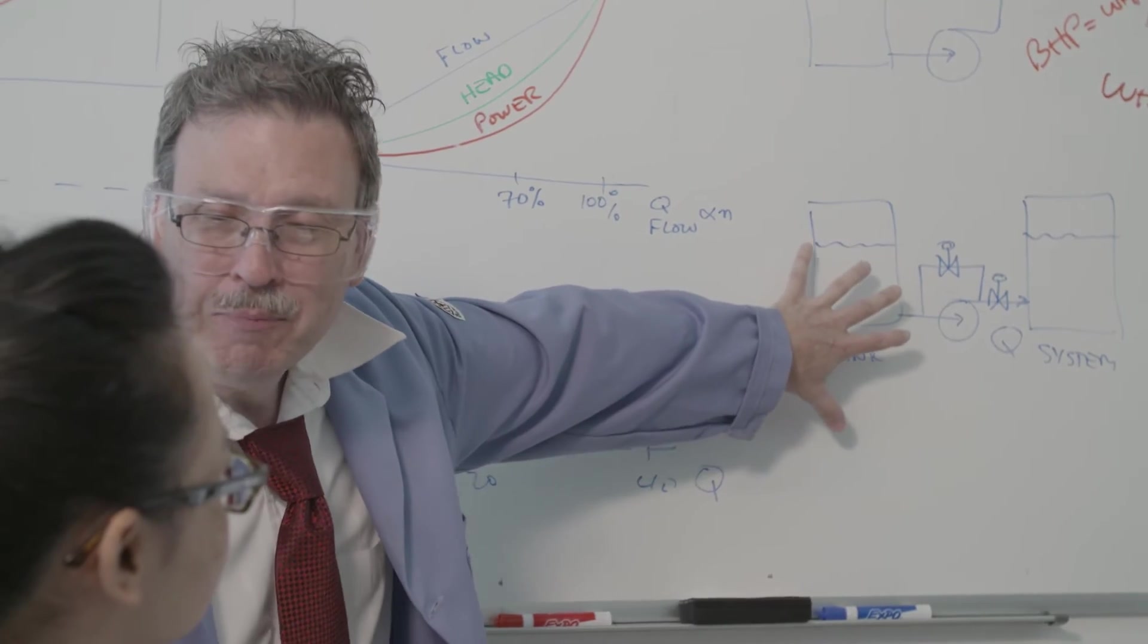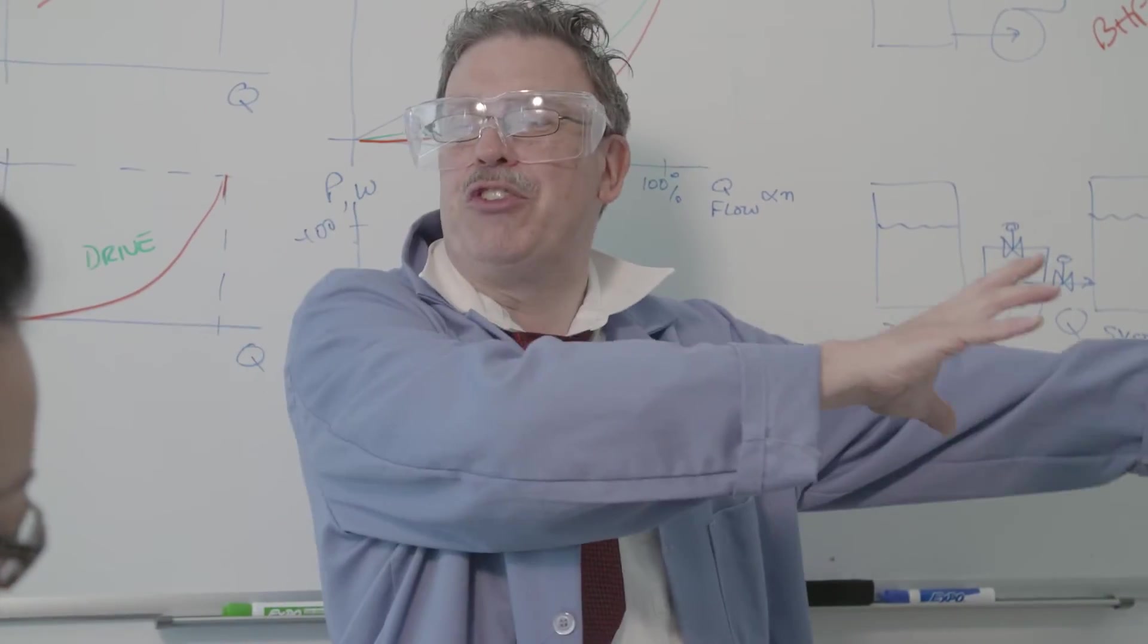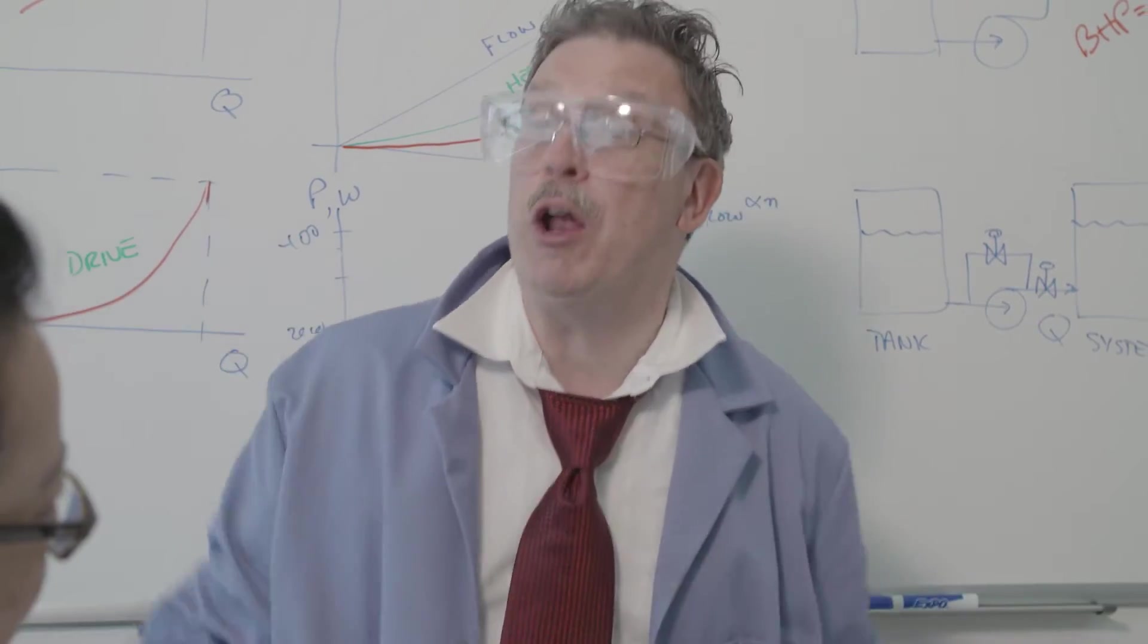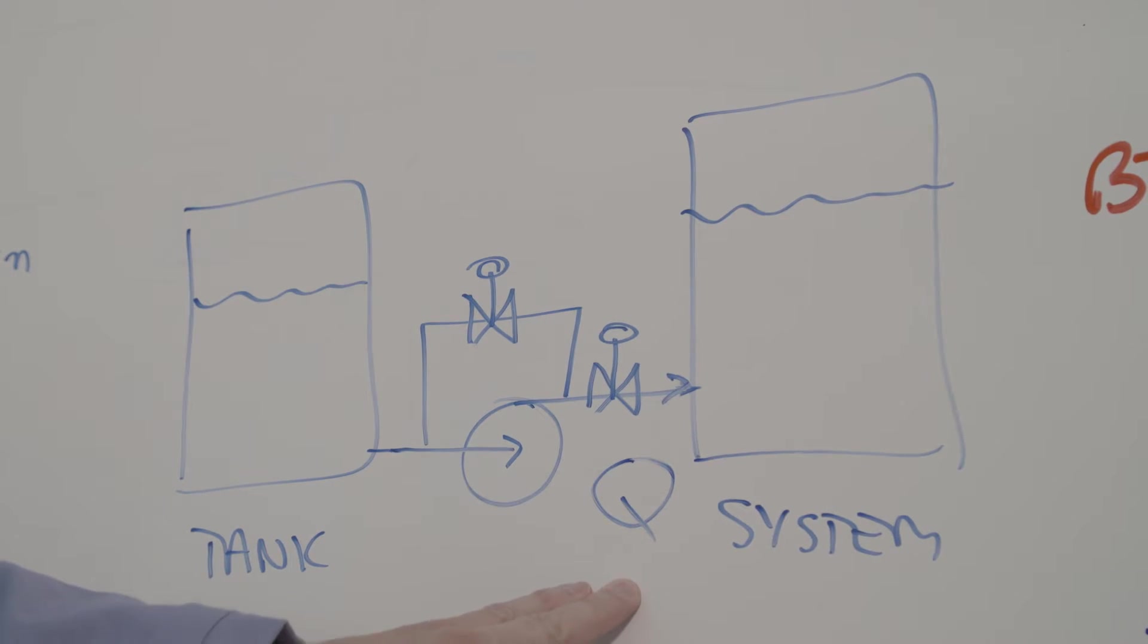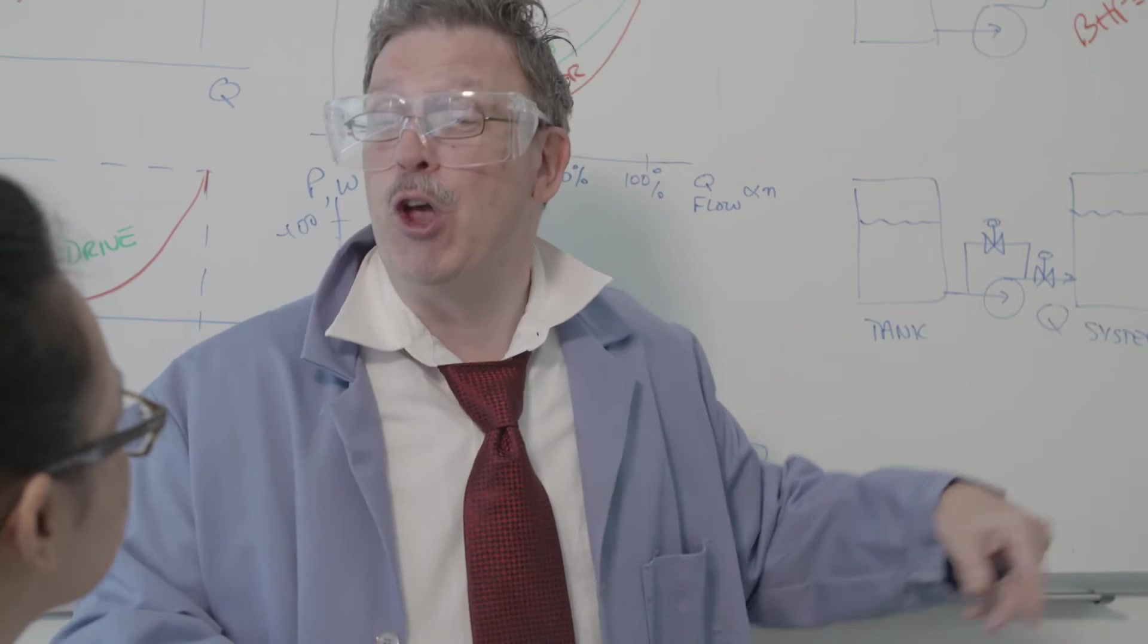Suppose we have a tank of water and we want to pump this out to a system for example like the city water supply. So I have a pump right here and we want to be able to control the flow of that water out to the system. Now we call flow Q.